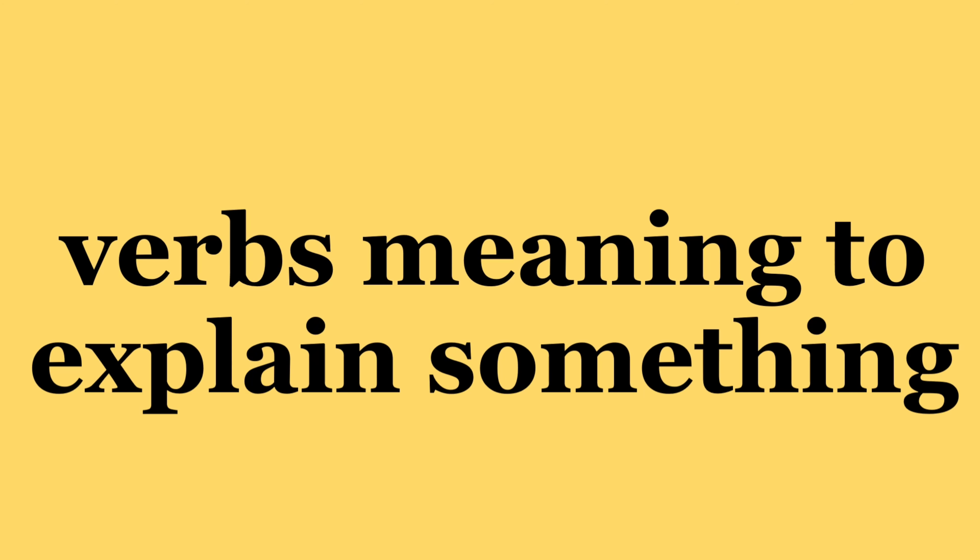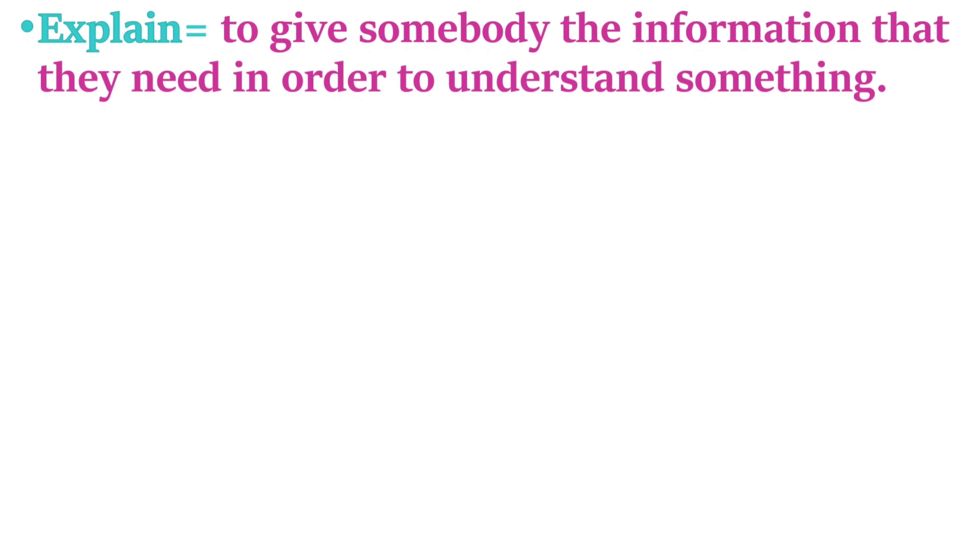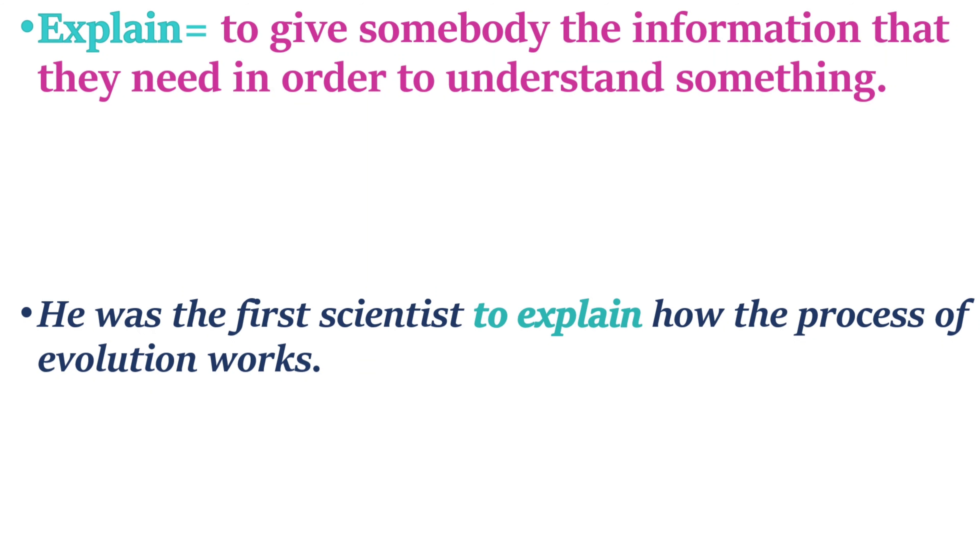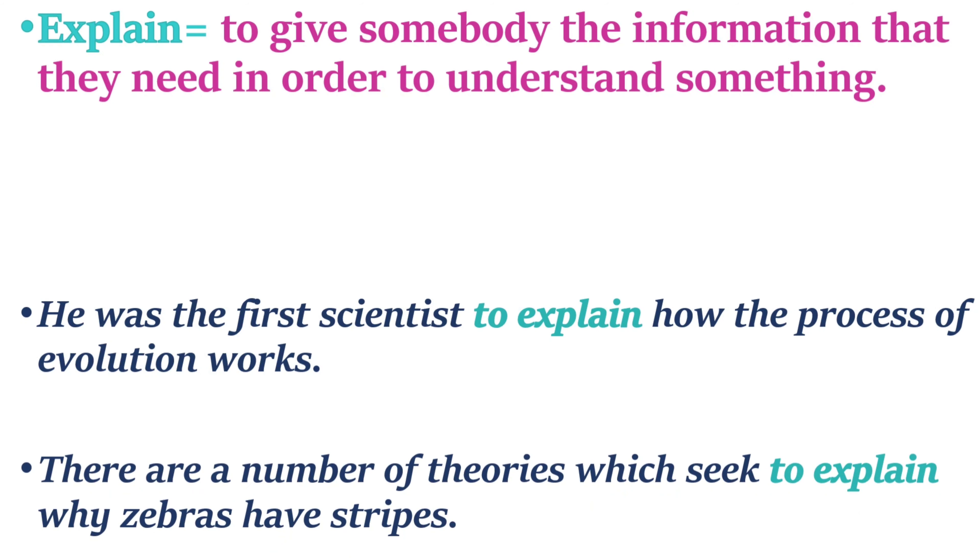Second part is about verbs meaning to explain something. 'Explain' means to give somebody the information that they need in order to understand something. Example: He was the first scientist to explain how the process of evolution works. There are a number of theories which seek to explain why zebras have stripes.